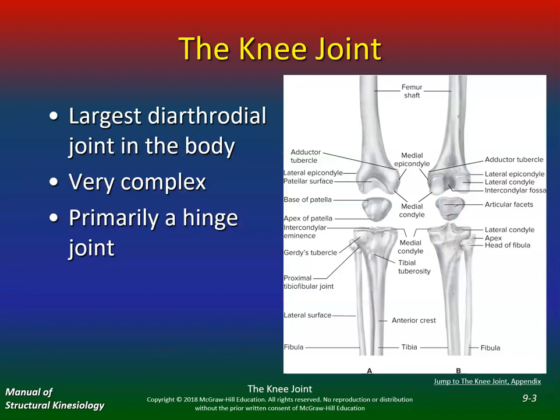So the knee joint — it's the largest diarthroidal joint in the body. Very complex. A lot of times people think the knee is simple. No, the knee is very complex. It's primarily a hinge joint, but it does have a screw-home mechanism that I'll show you how that works later on.